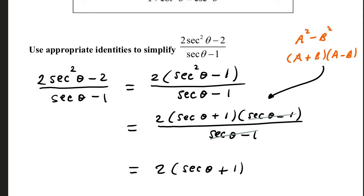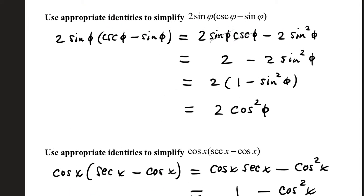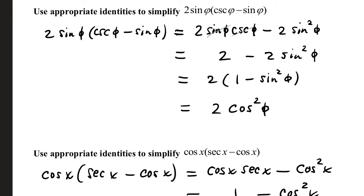Use appropriate identities to simplify (2sec²θ - 2) / (secθ - 1). First, factor a 2 out of the numerator: that's 2(sec²θ - 1). To eliminate the denominator, factor this as a difference of two squares. Recall from algebra that a² - b² = (a + b)(a - b), so this factors into (secθ + 1)(secθ - 1). Cancel (secθ - 1) from top and bottom, leaving 2(secθ + 1).